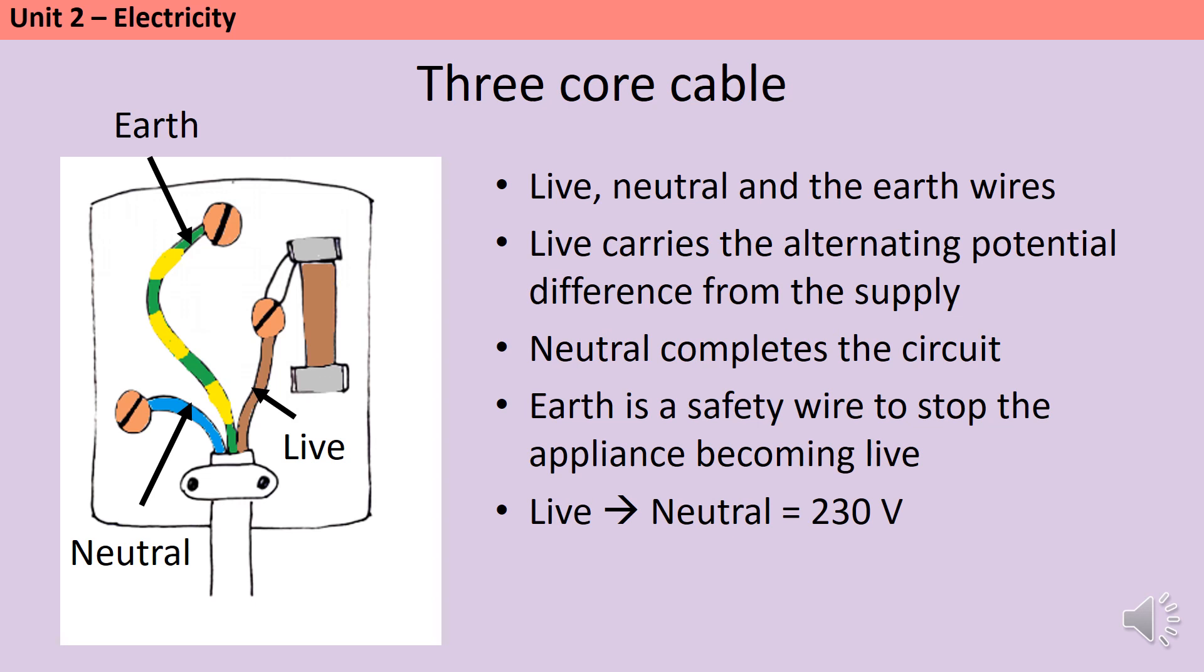So ordinarily, the potential difference between the live and the neutral wire should be around 230 volts, and also the potential difference between the live and the earth wire should be 230 volts, unless there's a fault in the circuit.